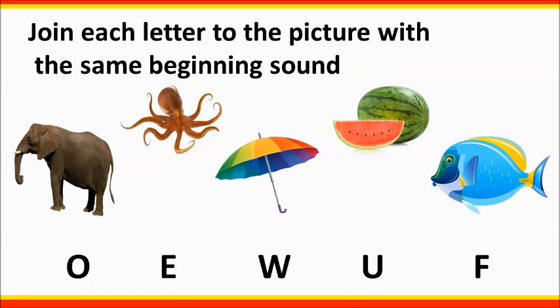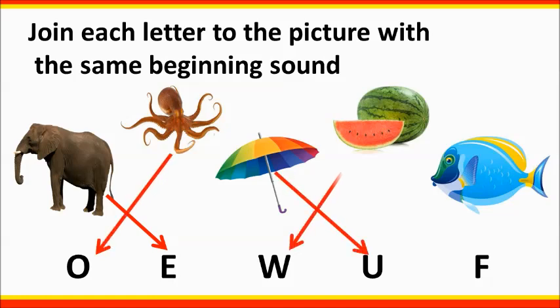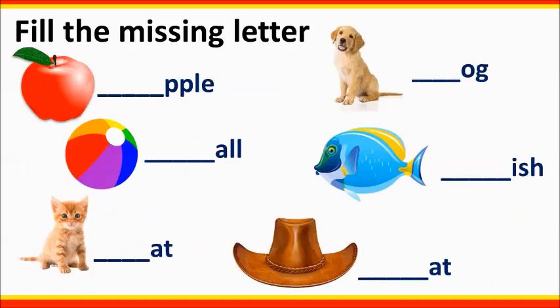Join each letter to the picture with the same beginning sound. E for elephant, O for octopus, U for umbrella, W for watermelon, F for fish.